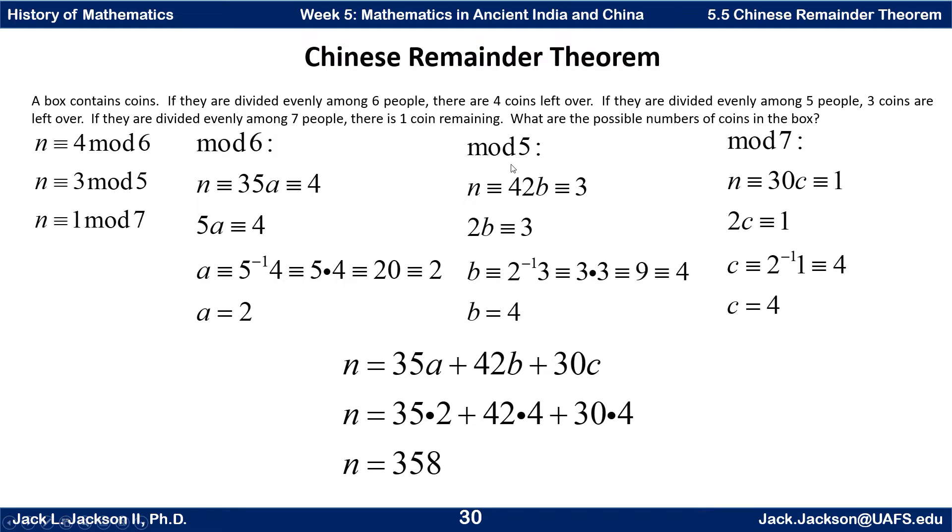How about mod 5? N is congruent to 42B, which is congruent to 3. In mod 5, 42 can be replaced by 2, because 42 divided by 5 is a remainder of 2. Basically, multiply both sides by the inverse of 2. We've got to find a number who, when we multiply it by 2, will turn that into a 1. 3 times 2 is 6, which is congruent to 1 mod 5. So 2 inverse is 3. 3 times 3 is 9. 9 is congruent to 4 mod 5. So we could take B to be 4.